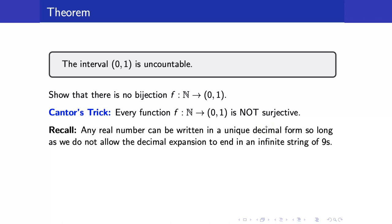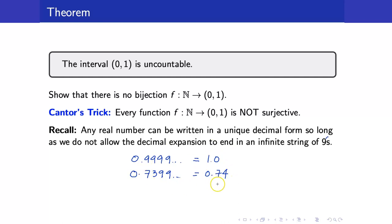First, recall that any real number can be written in a unique decimal form, so long as we do not allow the decimal expansion to end in an infinite string of 9s. For example, 0.9999... is the same as 1.0, and 0.73999... is the same as 0.74. So we will express every real number in (0,1) using its decimal expansion, and if it can be written in two ways, we always use the one not ending in an infinite string of 9s.